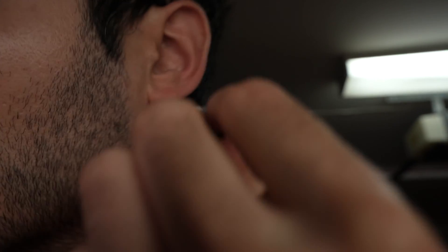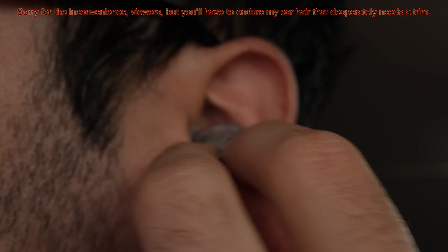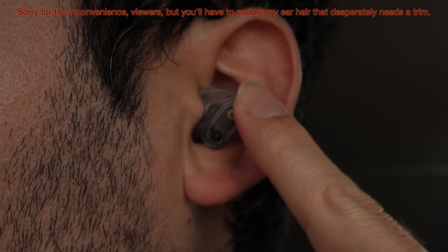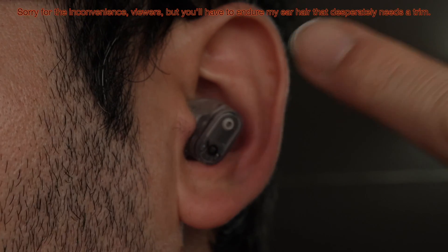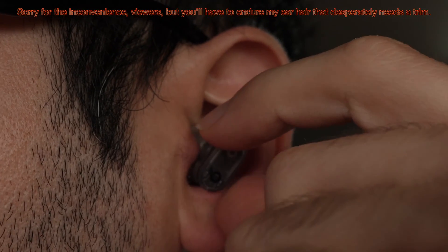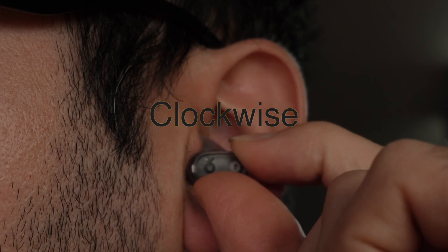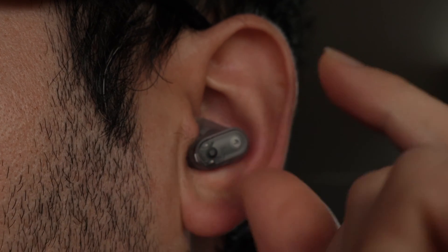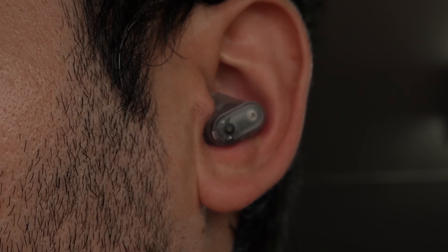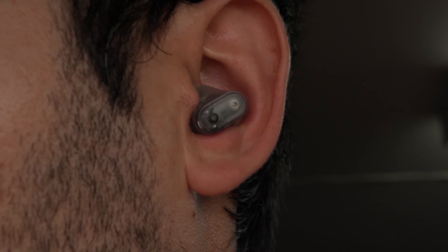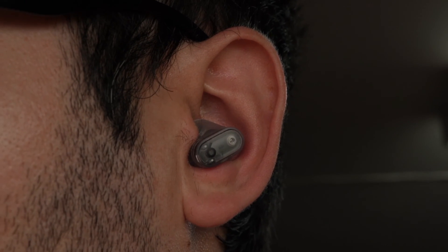Let me show you, I simply need first of all to put it directly like this, no matter in which position it is. And then what you need to do from this position is to turn the earbud counterclockwise like this until it locks in place. This way, even if I'm talking, eating, or even shaking my head, this will never fall.